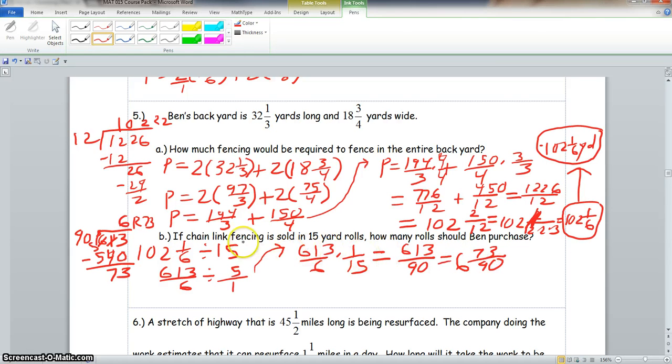But now remember, they're not going to let you buy 73 over 90 of a roll. So your answer here would be approximately 7 rolls.